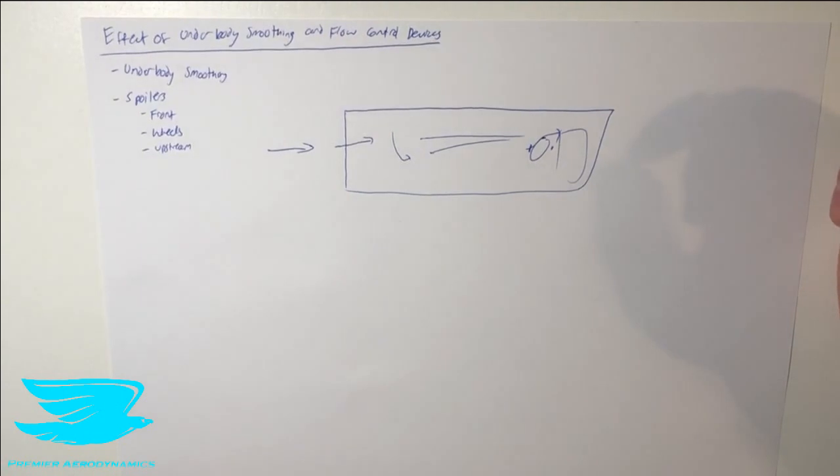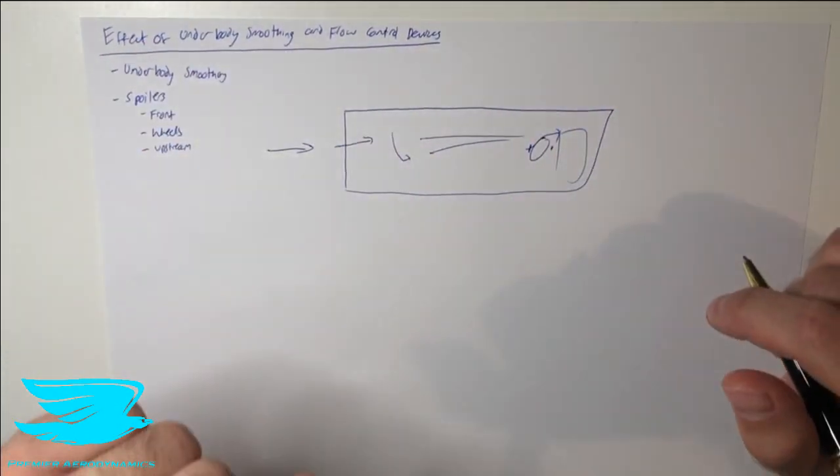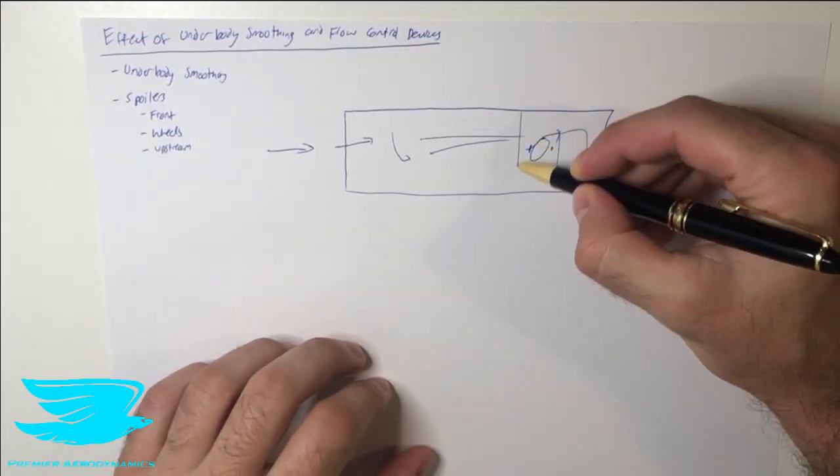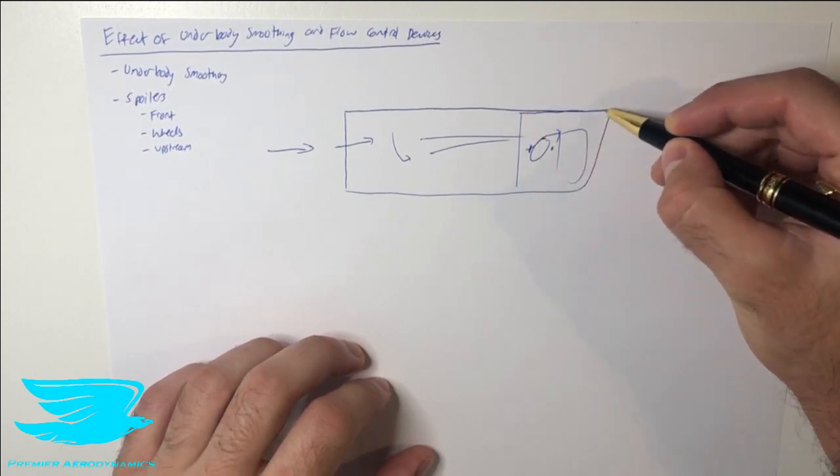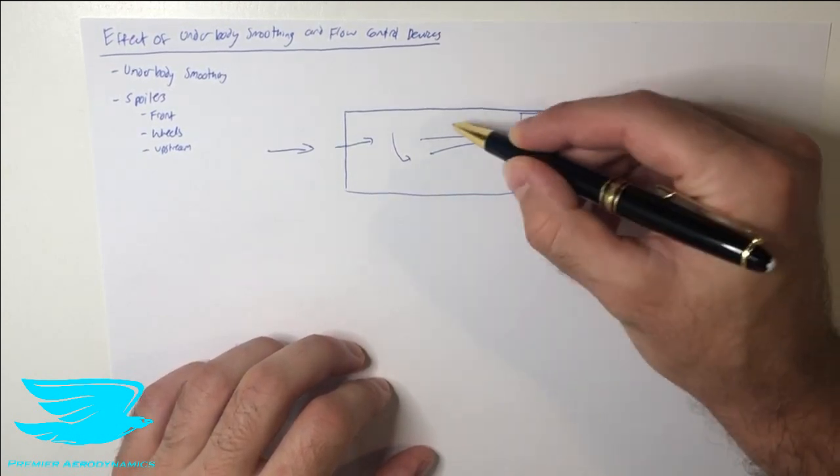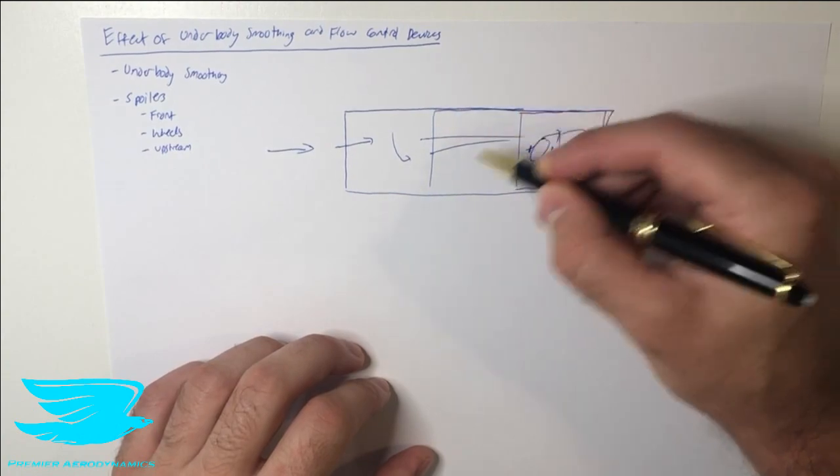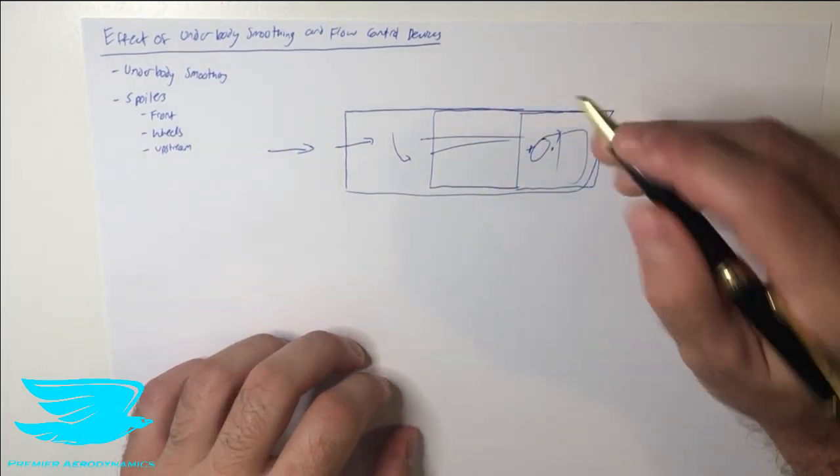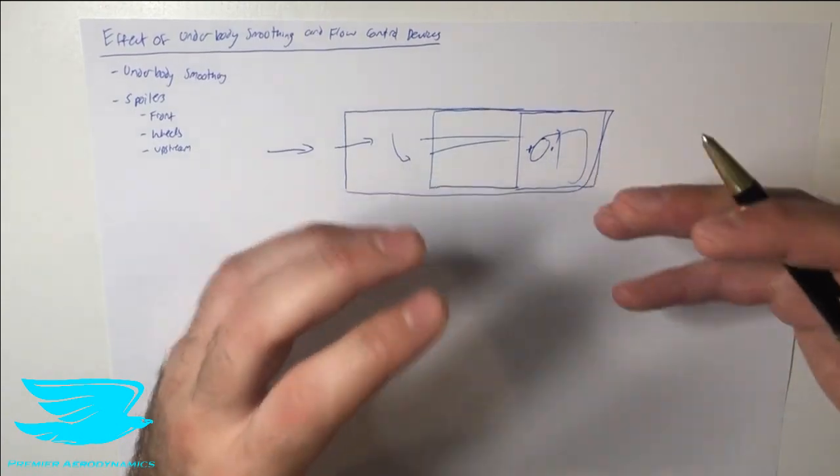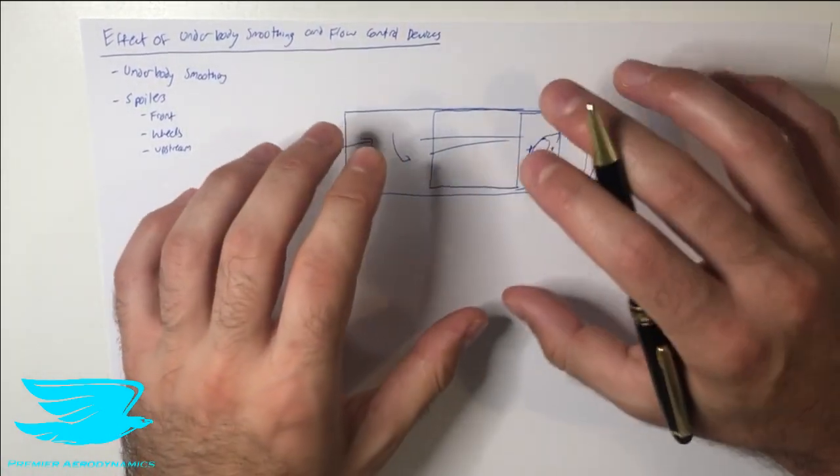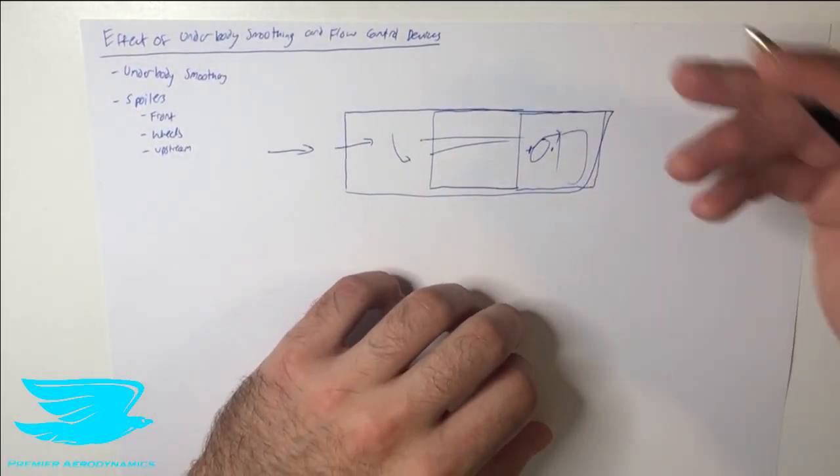So one way around this is we can cover these sections up. We can put these plastic plates on that we often manufacture especially for this purpose to cover up a lot of these sections and make it smoother. By making it smoother, we don't have these things jutting out into the flow. That means we don't get this flow separation nearly as much, and we don't get as much drag.